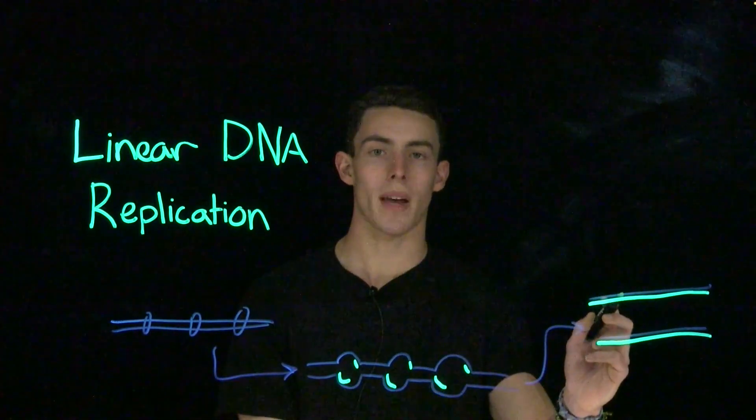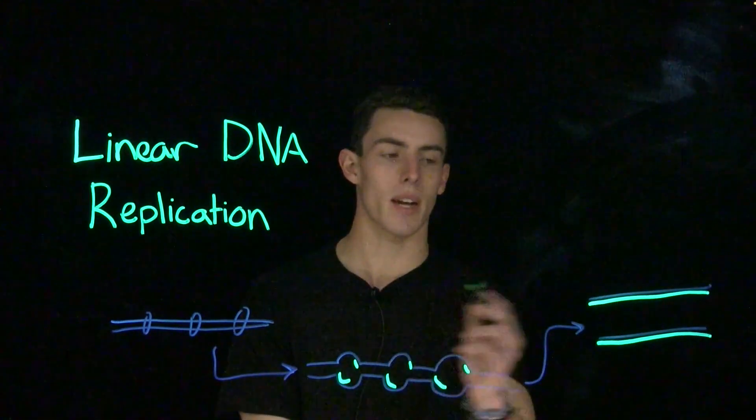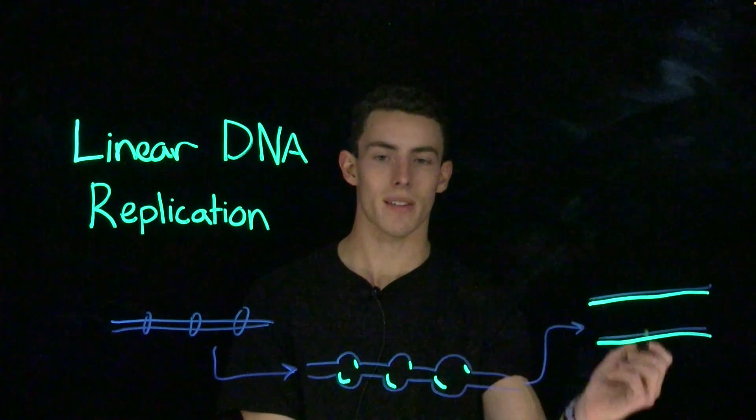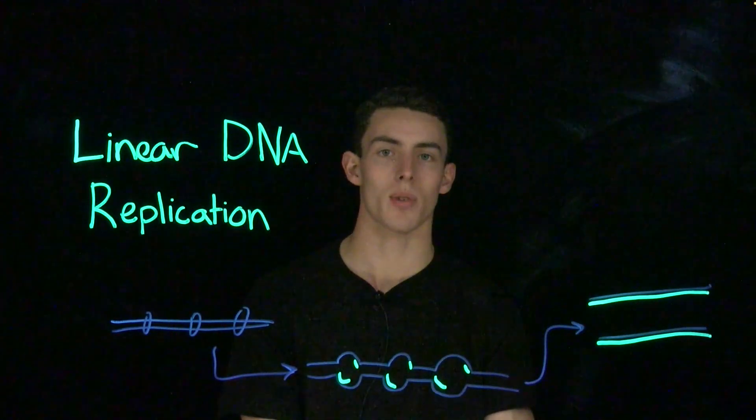Just like before, at the end of DNA replication with a linear strand, we have two genetically identical molecules of DNA that result.